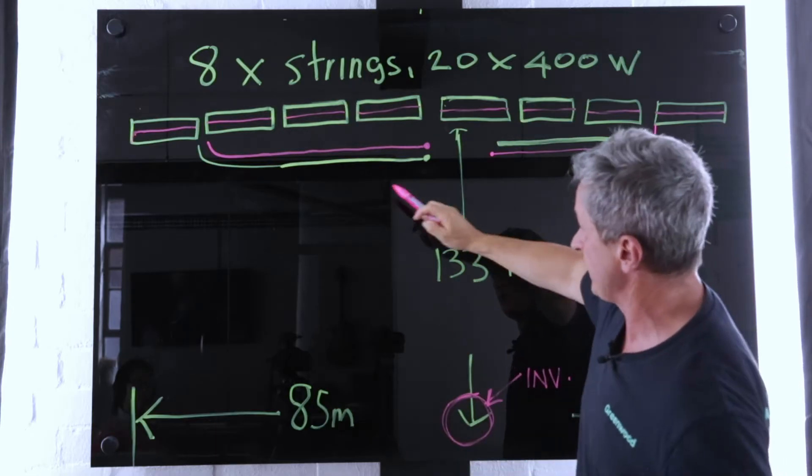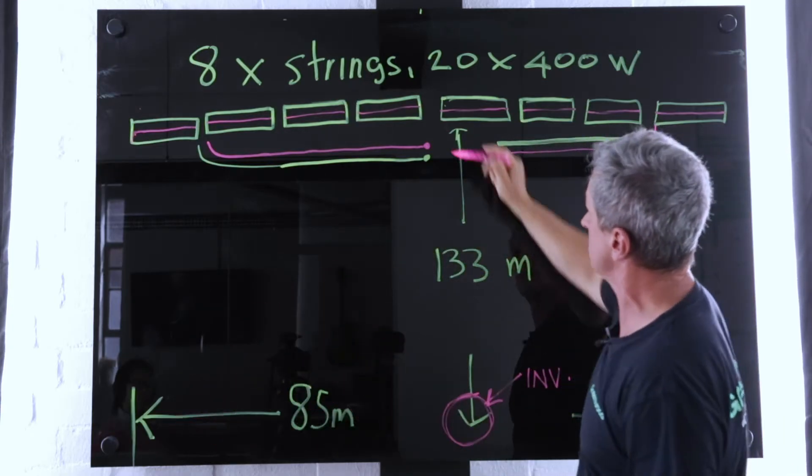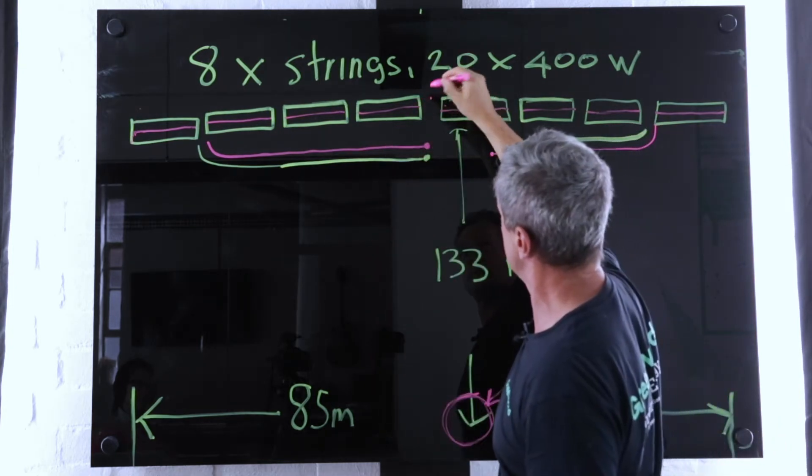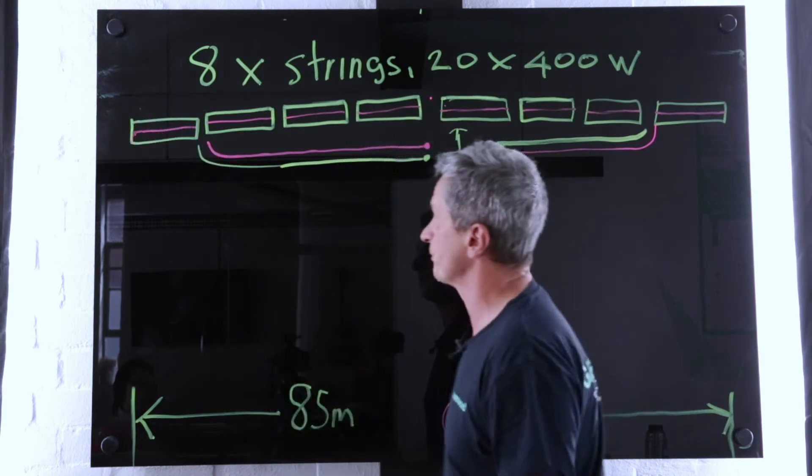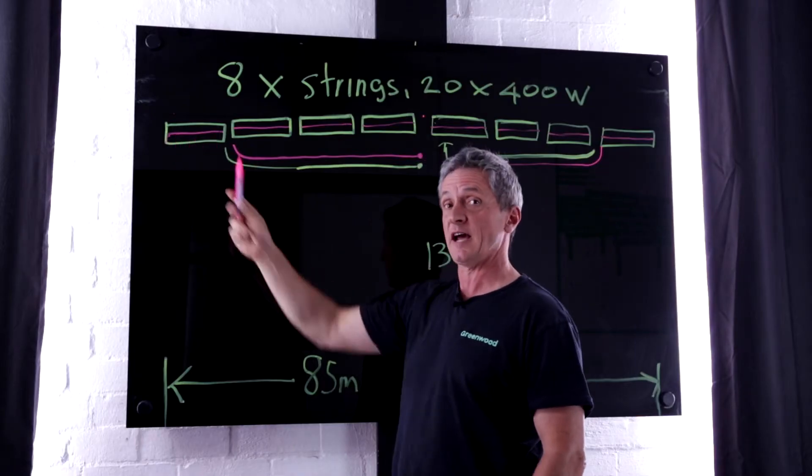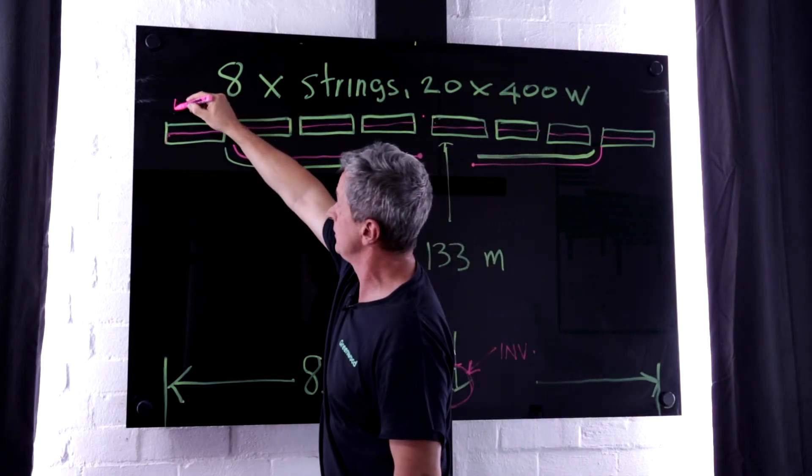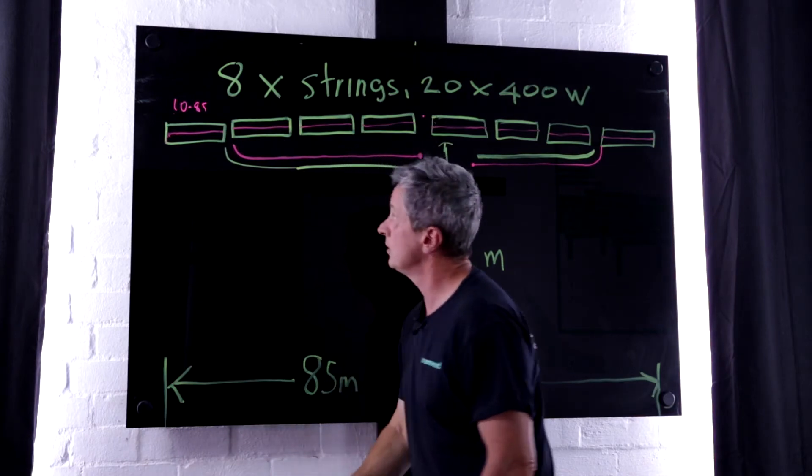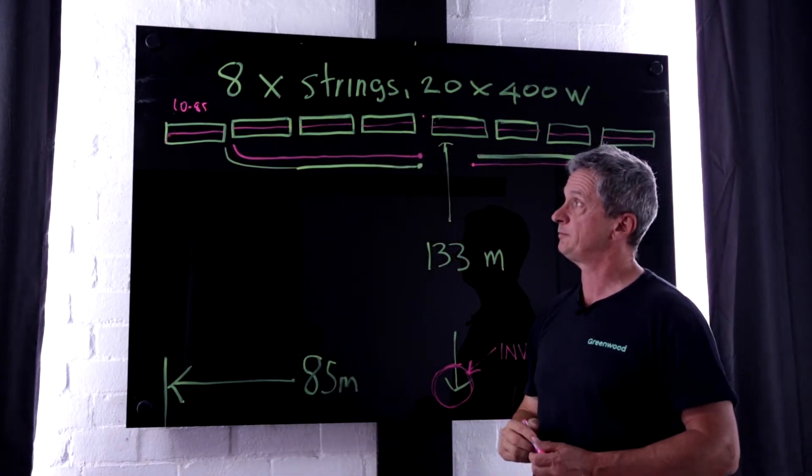So, we know it's 85 metres across, so the central point is around about 42 and a half metres. From here to here. Now, each string takes up approximately 10.85 metres.